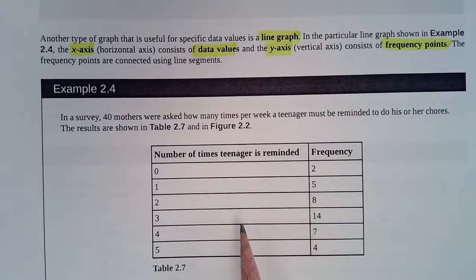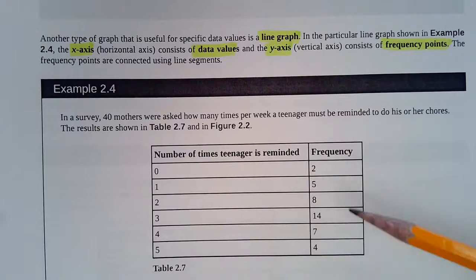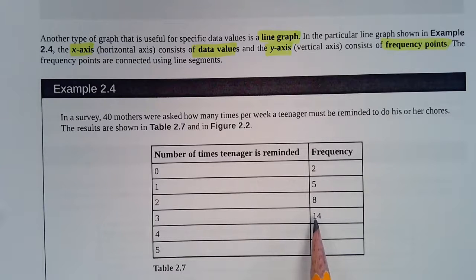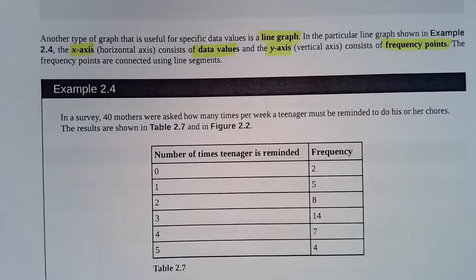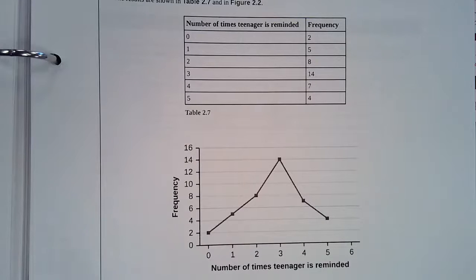So we've got our frequency table here. The number of times teenagers need to be reminded to do his or her chores, 0 times all the way up through 5 times. So over here is our column for frequencies. So this means that 14 surveyed teenagers, mothers talking about their teenagers, 14 of them said that they had to be reminded 3 times. And this one says that the data value of a teenager being needed to be reminded 4 times occurred 7 different times in the sample.